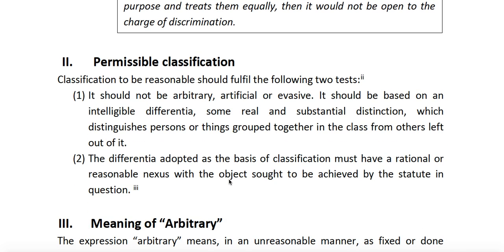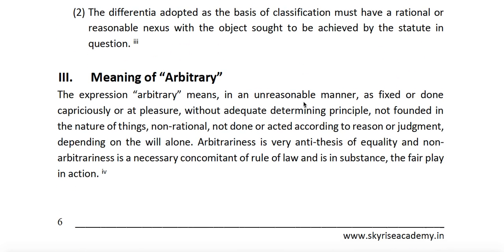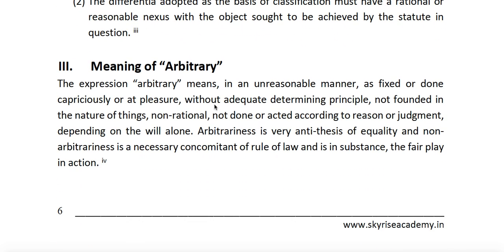The classification must fulfill two tests. First, it should not be arbitrary, artificial, or evasive — it must be based on an intelligible differentia. Second, it must have a rational and reasonable nexus with the objects to be achieved by the statute in question. The term 'arbitrary' means discretion at pleasure without adequate principle, not founded on reasons, not acting according to judgment, involving uncontrolled discretion and personal bias. The presence of even one of these elements will come within the ambit of the term arbitrary.